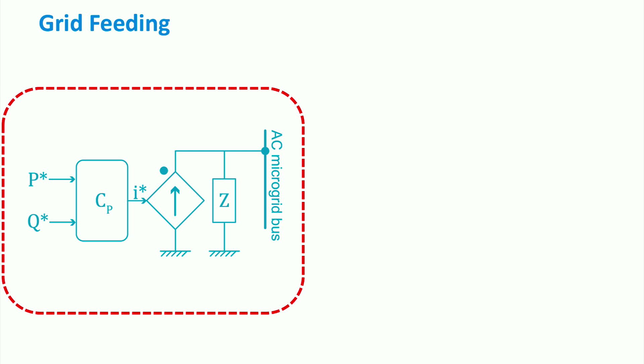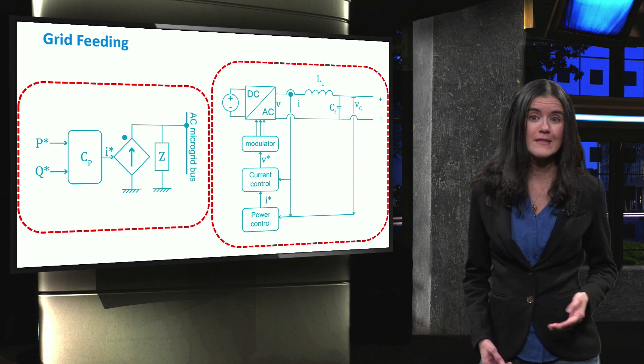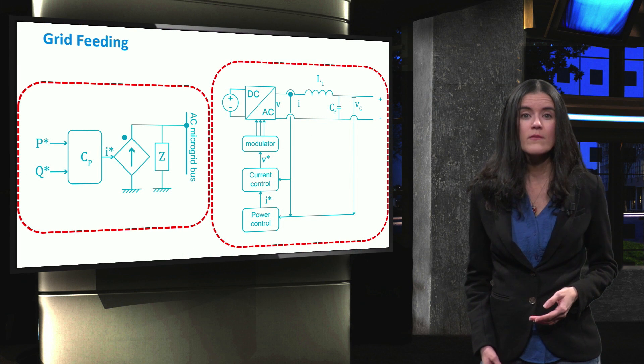Unlike the grid-forming converter, the grid-feeding type can be operated in both grid-connected and islanded modes. The outer loop controls the levels of active and reactive power, as shown in the figure on the right-hand side, and the inner loop controls the current of such inverters. Finally, the required voltage is applied typically through a modulator, which features modulation techniques such as pulse-width modulation.